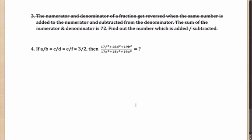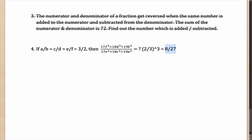Question four is straightforward. Notice that the coefficients of f and e, b and c, b and a are the same — so you just cube the original ratio. It becomes f³:e³, d³:c³, b³:a³. If a, c, e had been in the numerators and b, d, f in the denominators, the answer would be (3/2)³. But since d, d, f are in the numerator and a, c, e are in the denominator, the answer is (2/3)³ = 8/27.